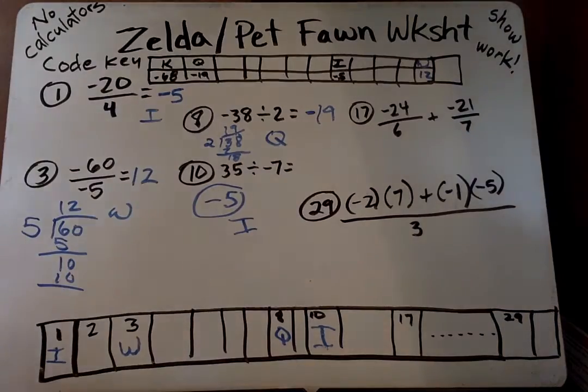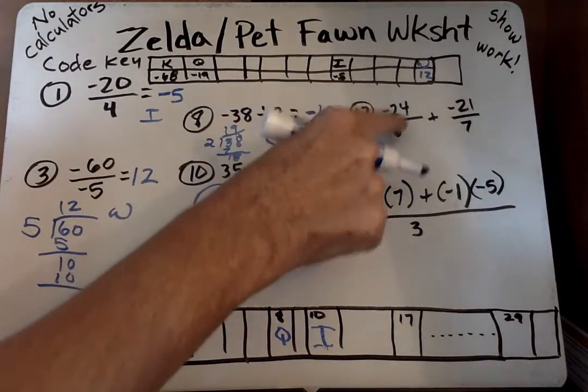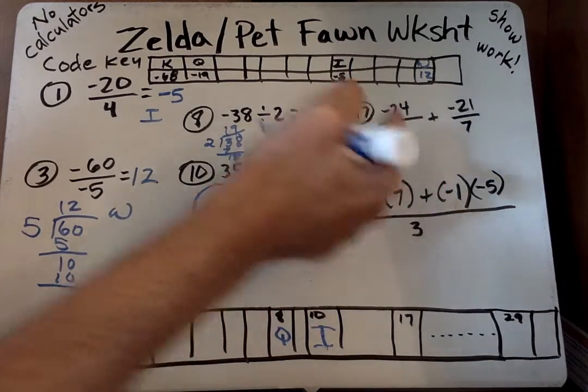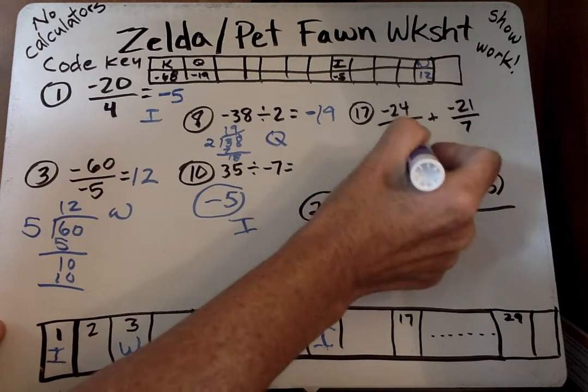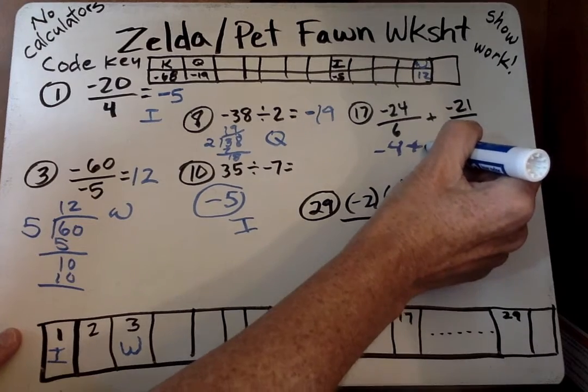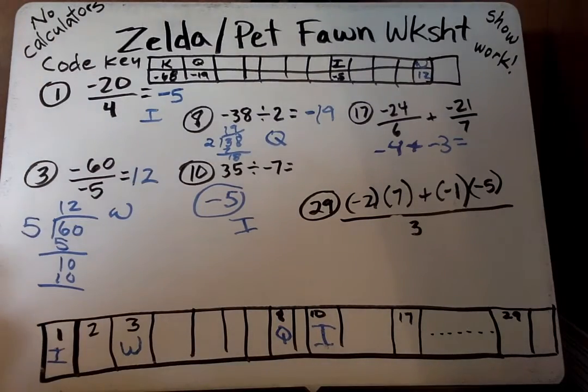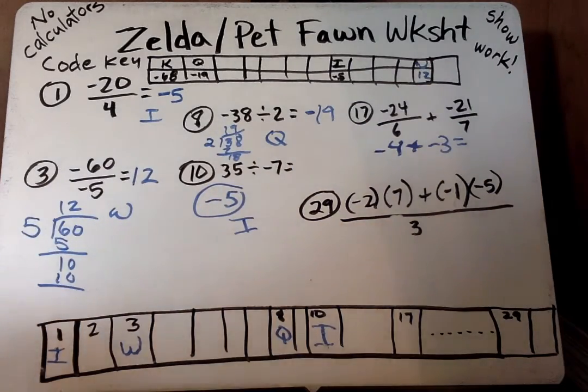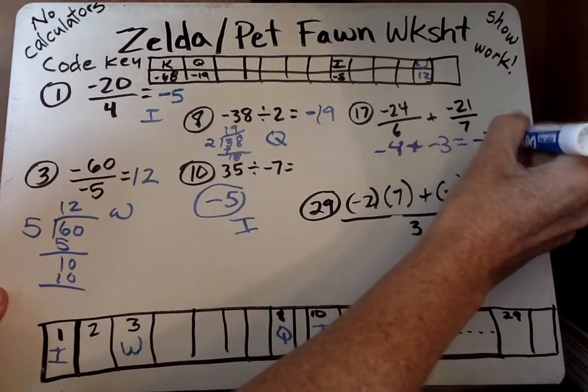We're going to jump to 17. And we have a combination of division and addition. Here we have to do division first because it's separated by the plus sign. Negative 24 divided by 6, again, it's negative divided by positive, they're different signs, so it's negative 4. Plus, negative 21 divided by 7, signs are different, so then we say it's negative 3. Now we have to use our rules for addition.